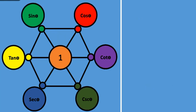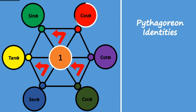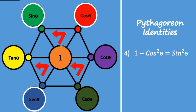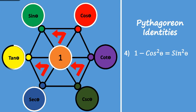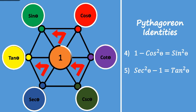Have a look at this orientation of arrows — it defines Pythagorean identities in reverse order. It states: 1 minus cosine squared theta equals sine squared theta (identity 4). Secant squared theta minus 1 equals tan squared theta (identity 5). Cosecant squared theta minus cot squared theta equals 1 (identity 6).